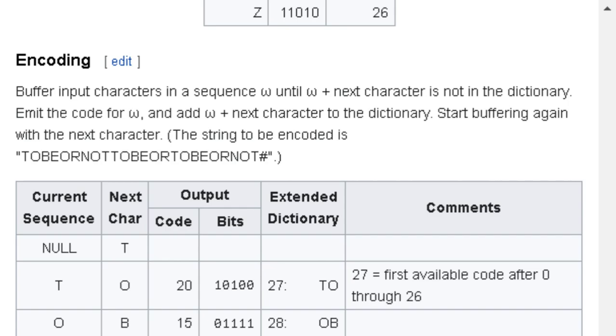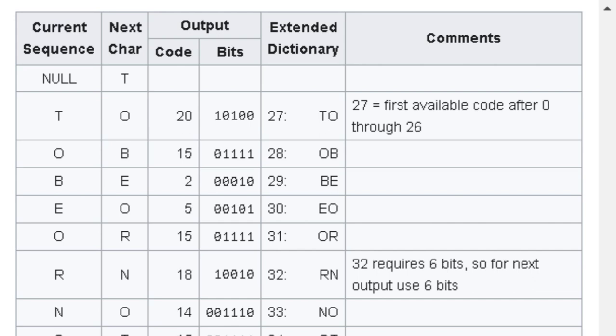Encoding: Buffer input characters in the sequence omega until omega+next character is not in the dictionary. Emit the code for omega and add omega+next character to the dictionary. Start buffering again with the next character. The string to be encoded is 'to be or not to be or to be or not #', and hashtag indicates the end of the string. The table below has columns: current sequence, next character, output code and bits, extended dictionary, and comments.